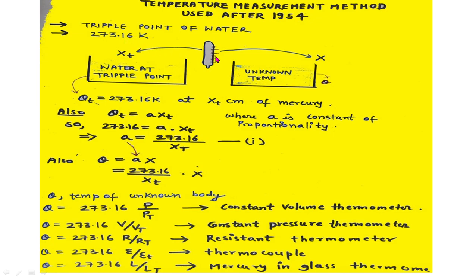For example, a mercury-in-glass thermometer is placed in contact with water at the triple point, as shown here. This thermometer is placed in contact with water which is at triple point temperature, that is, at 273.16 Kelvin. The thermometer is first placed in contact with this container containing water at 273.16 Kelvin.